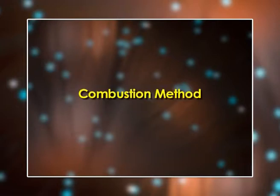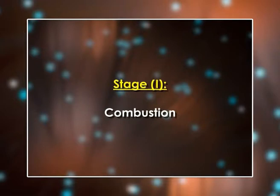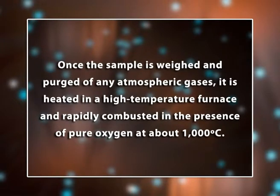The second chemical method is the combustion method, which involves burning a sample in an oxygen-rich atmosphere at high temperatures and analyzing the resulting gases. The process has three stages. First, combustion: the sample is purged of atmospheric gases, then heated in a high-temperature furnace and rapidly combusted in the presence of pure oxygen at about 1000°C. Cupric oxide may be used to complete the oxidation.